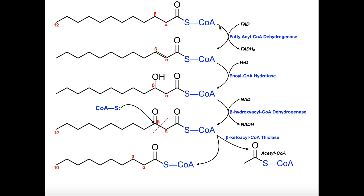At this point, we've talked about activating the fatty acid by ligating it to a coenzyme A, and we've talked about transport of said fatty acid into the mitochondria. Now we're in the mitochondrial matrix, and we can discuss beta-oxidation.